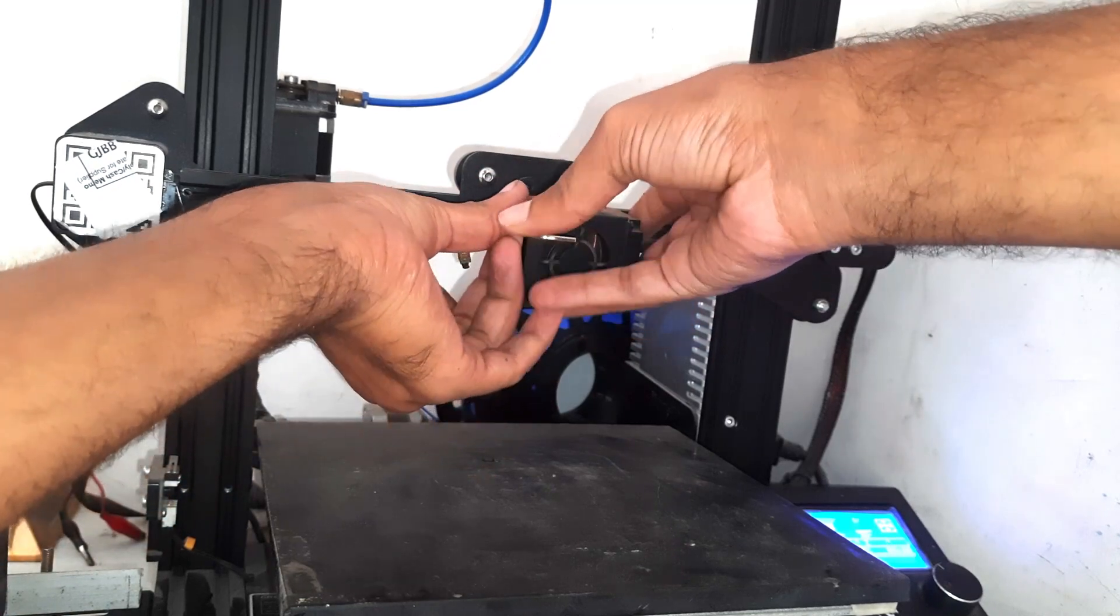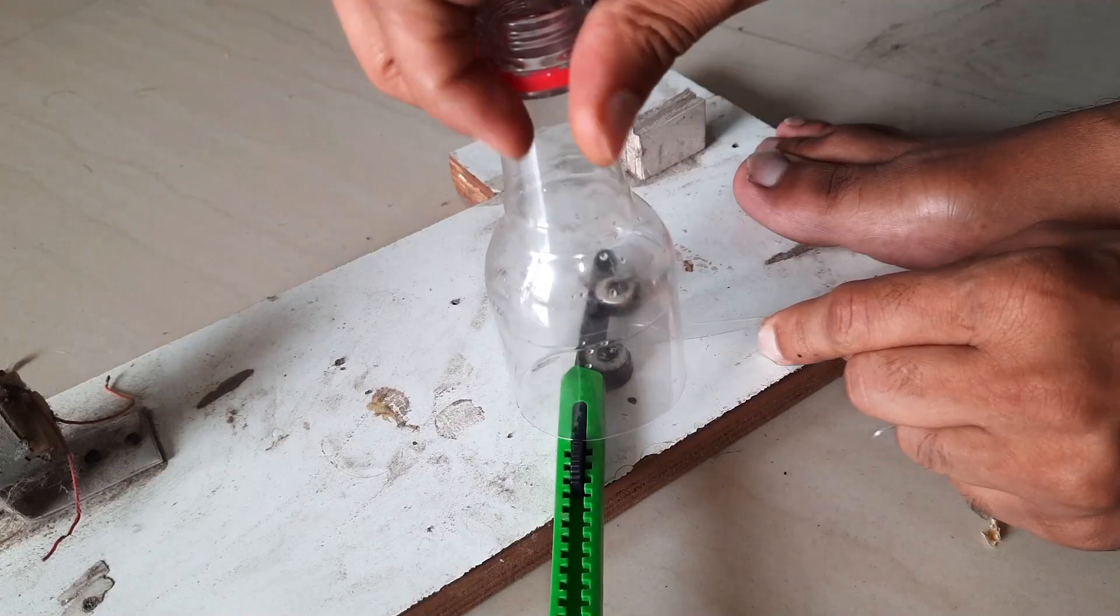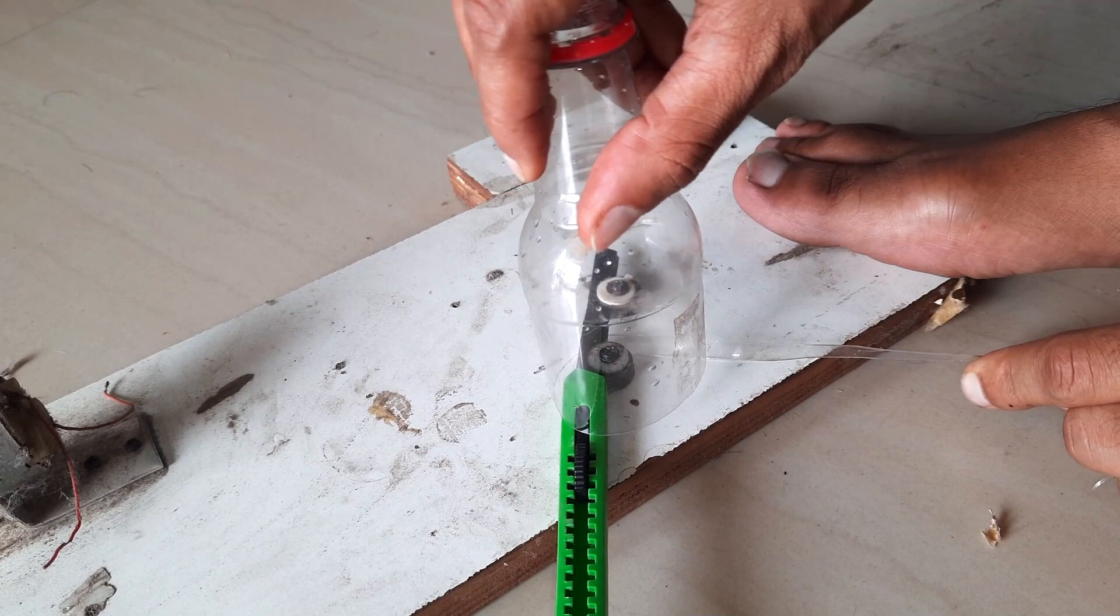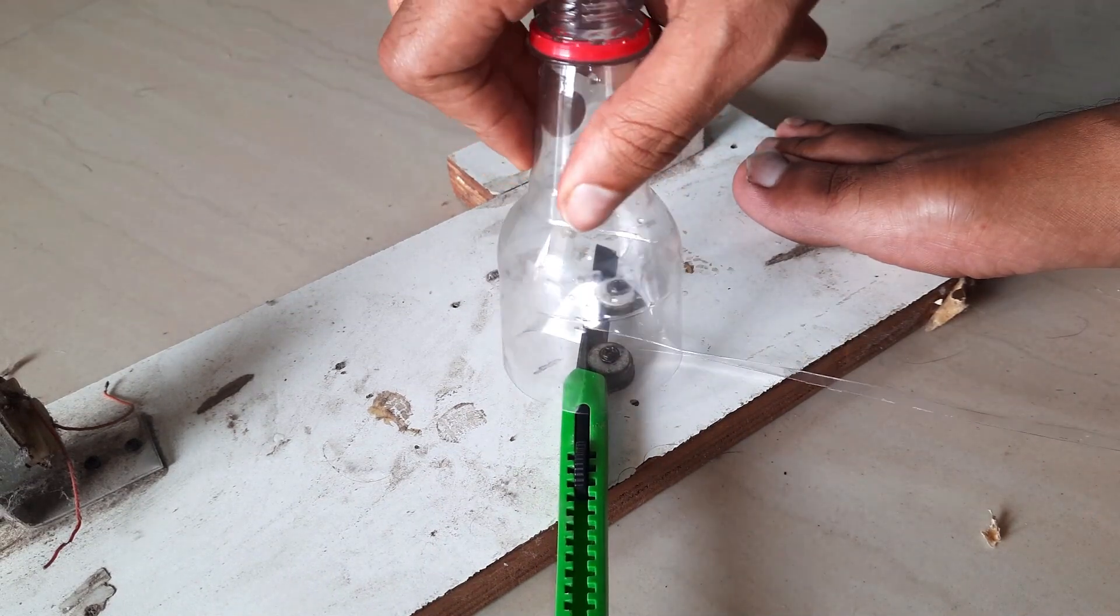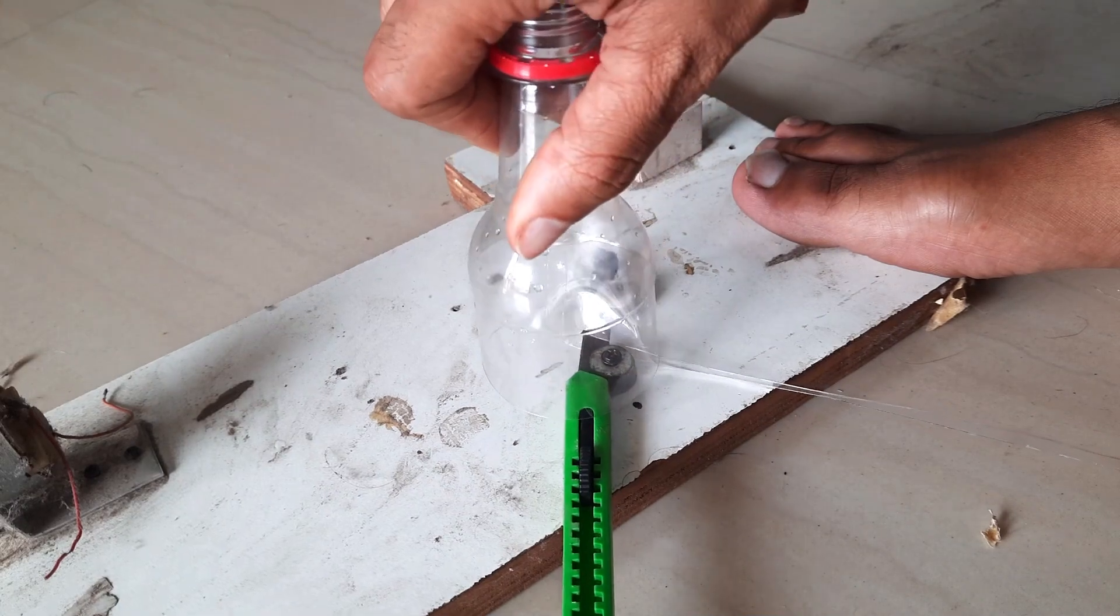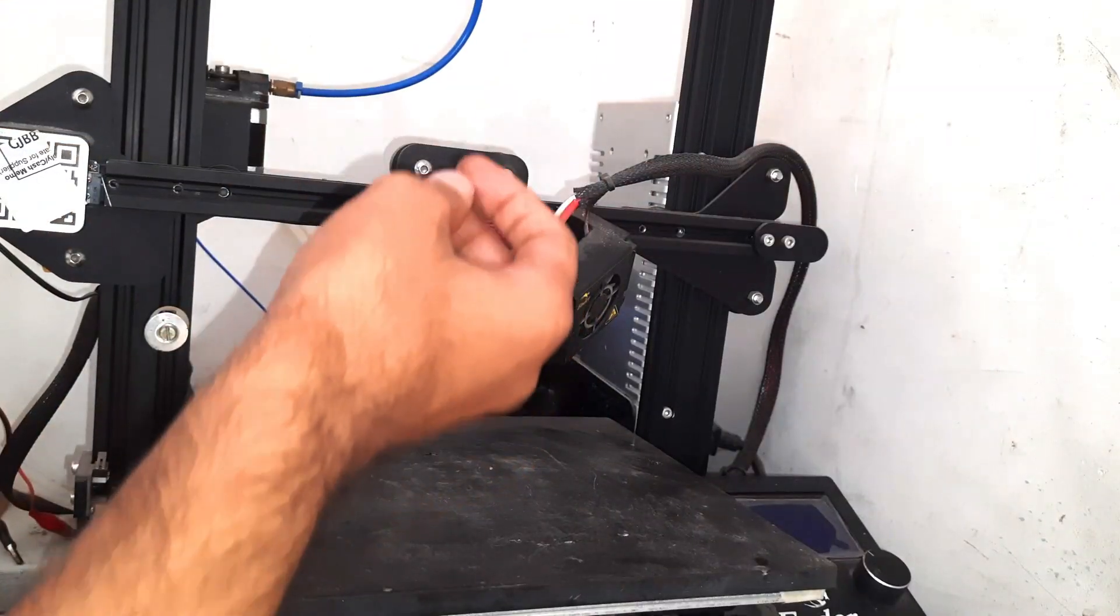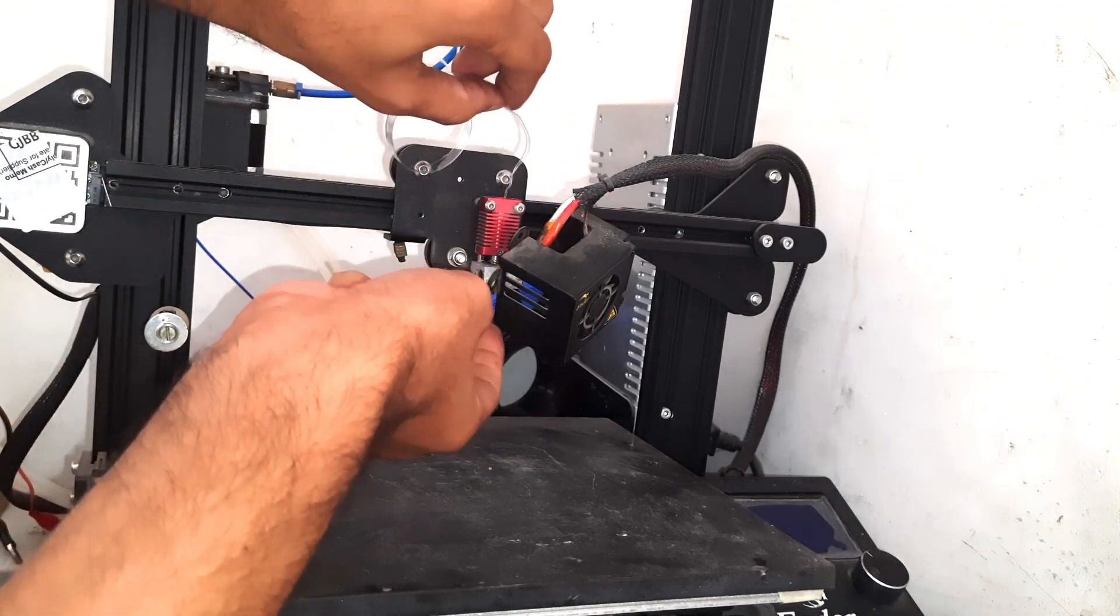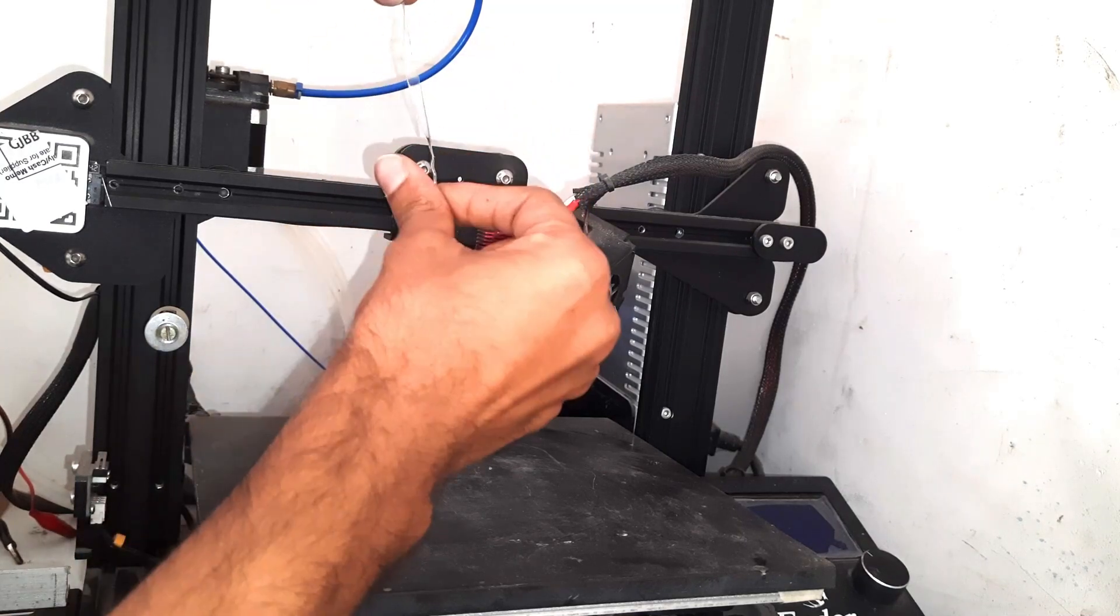And now we need a plastic strip, and for that I have screwed this blade on the board to get the uniform thickness. Placing the strip on the nozzle for that I have made the thin end so that it can easily pass through the nozzle.